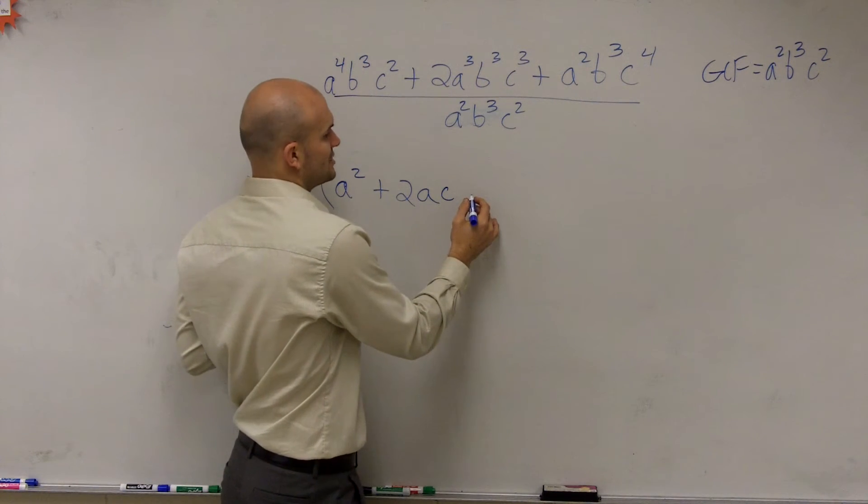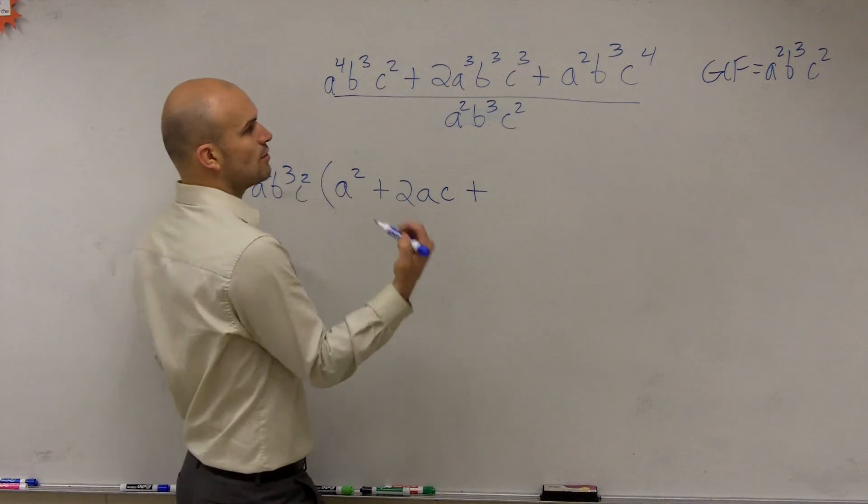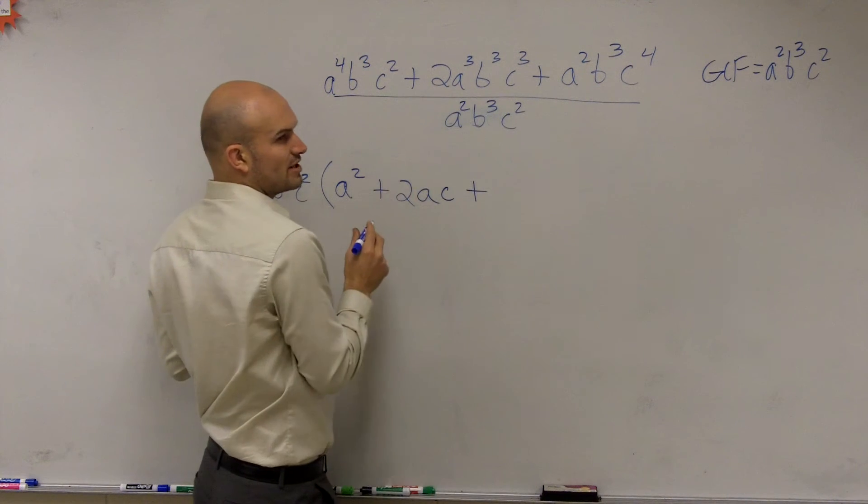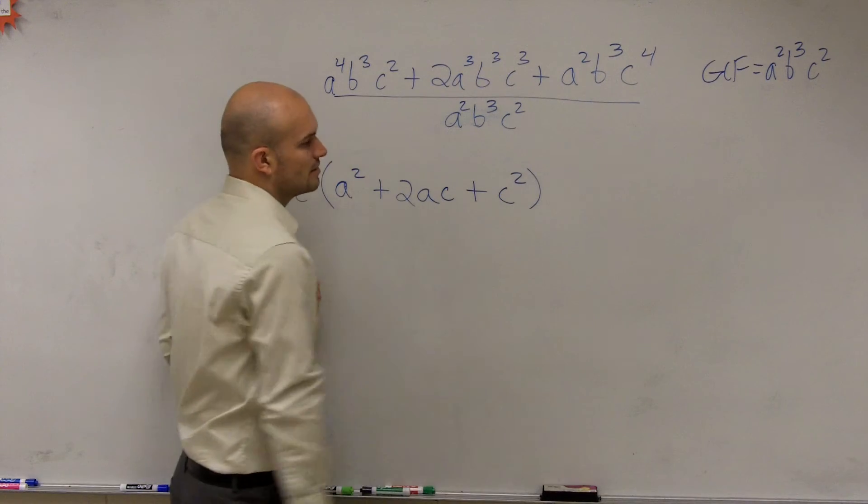Then we go to our last term, which is plus a squared divided by a squared is 1, b cubed divided by b cubed is 1, and c to the fourth divided by c squared is c squared.